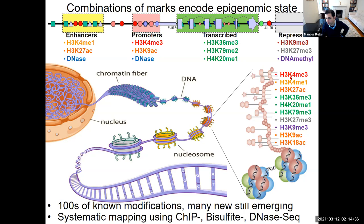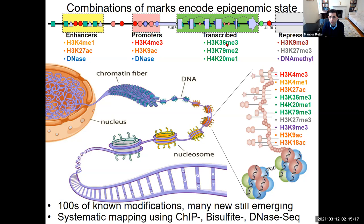These histone tail modifications include acetylation and methylation groups. Two additional epigenomic marks work in combination with these. One is directly on the DNA: CpG dinucleotides — a C followed by a G in the 5' to 3' direction — can be modified with DNA methylation, effectively changing the meaning of letters of DNA.